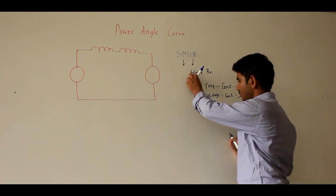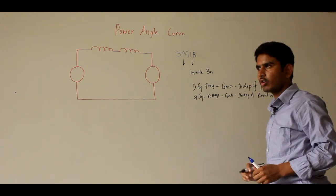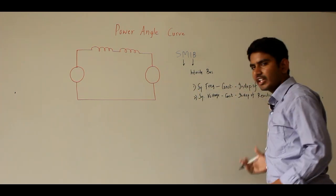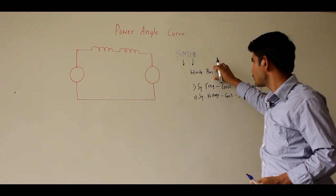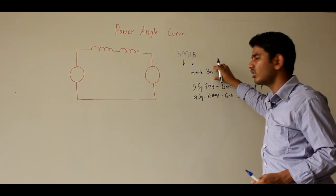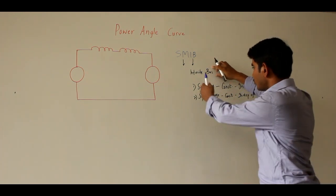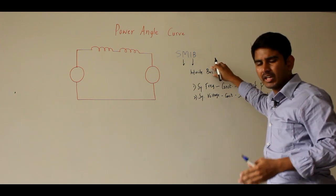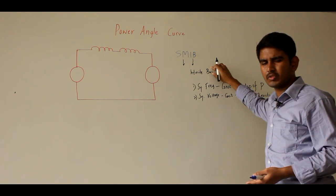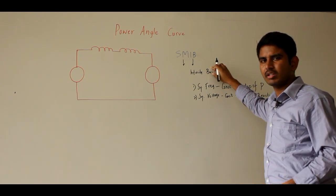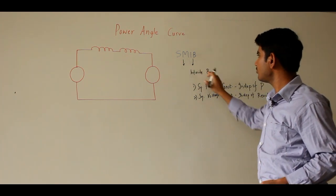The infinite bus is characterized by system frequency and system voltage, which remain constant irrespective of changing real or reactive power. In practice, this infinite bus does not exist, but it is useful for making approximations that system voltage and system frequency are constant when modeling a connection to large utility or grid networks. This is the Single Machine Infinite Bus system.